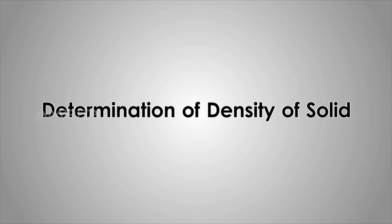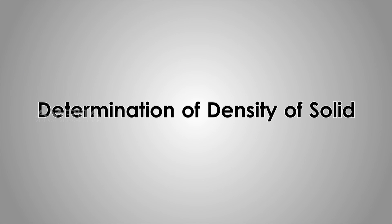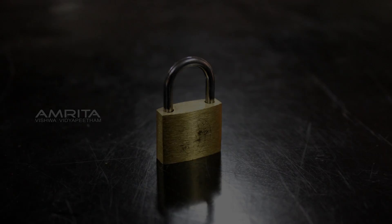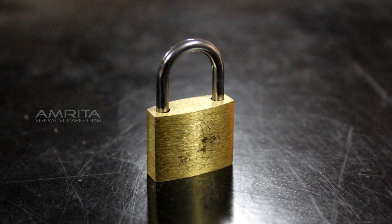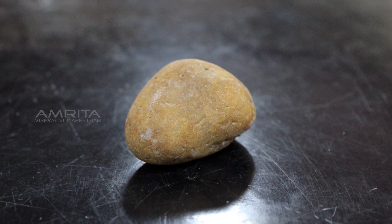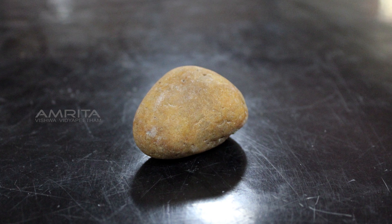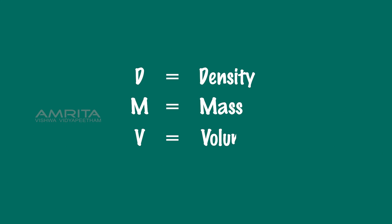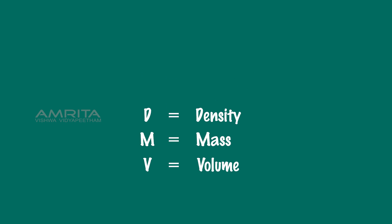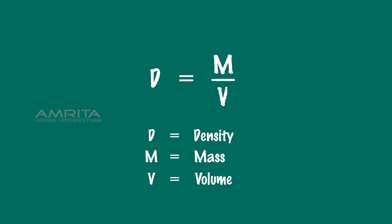Determination of Density of Solid. The density of a material is defined as its mass per unit volume. If d is the density of a body of mass m and volume v, then d is equal to m divided by v.